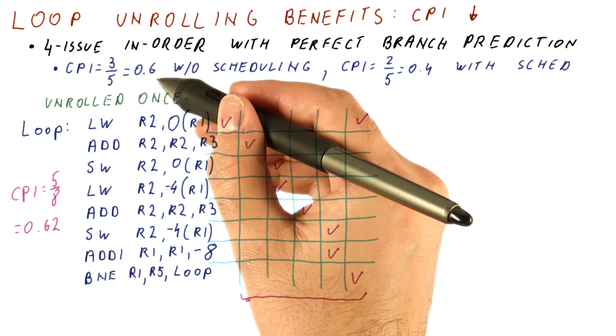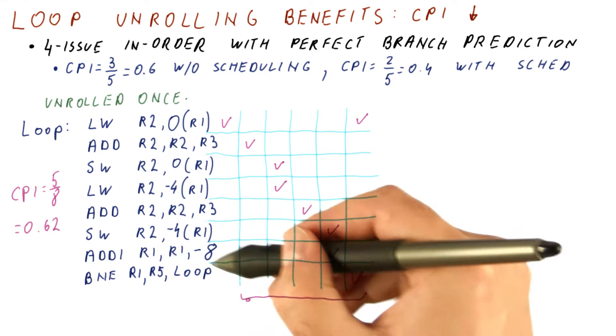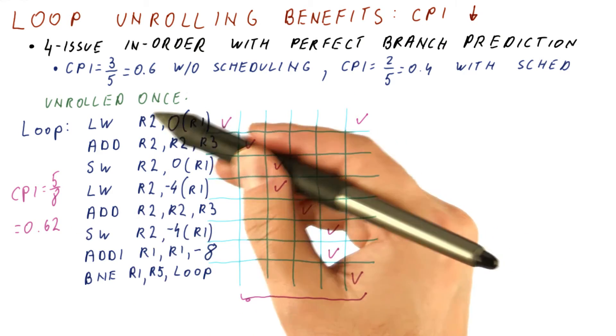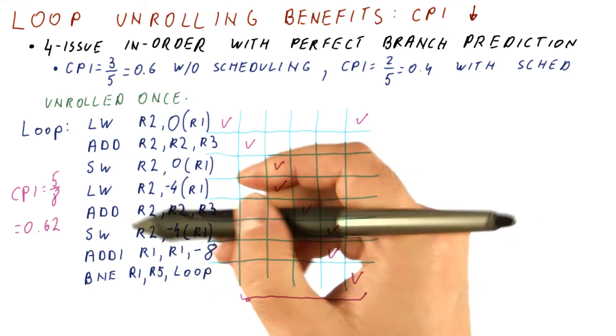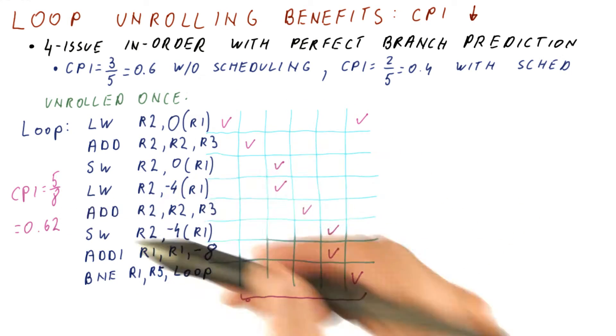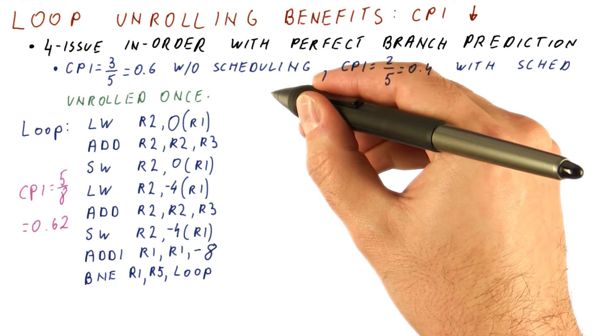So these are very similar in CPI. We still gain significantly from eliminating some instructions. So overall, this loop is going to perform better, but the CPI has not improved. But let's see what scheduling does after unrolling.